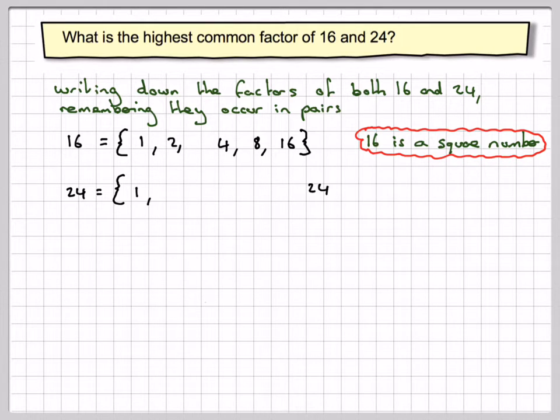Doing the same for 24. So we've got 1 and 24, 2 and 12, 3 and 8, and 4 and 6.